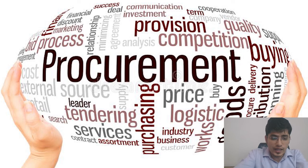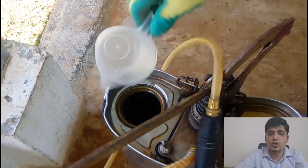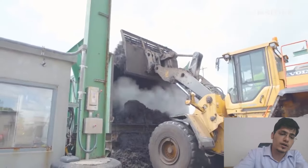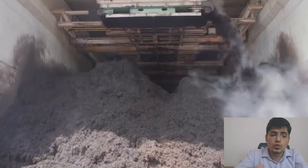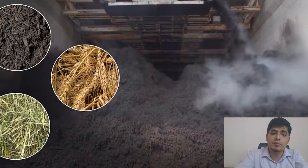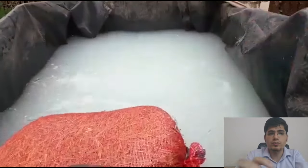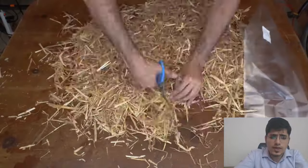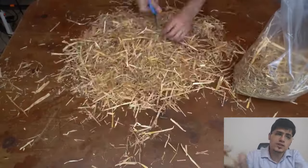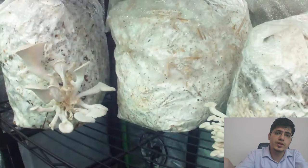In week two, we'll discuss sterilization of cropping rooms and how we do it in our farms — we'll show you that. Then we'll go to substrate sterilization, compost sterilization, and mushroom bag preparation. We'll have a practical session showing how we prepare bags in our farm, and once you get the practical sense you can make your own bags along with us.